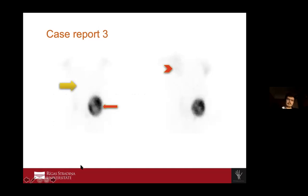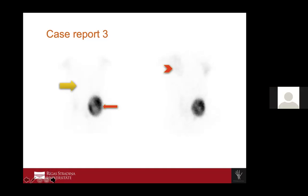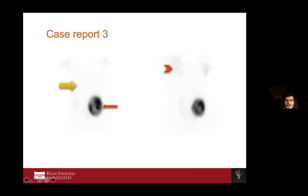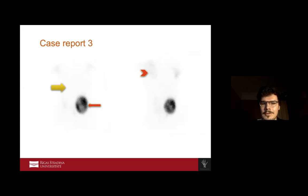Case 3: This is in the neck region — scintigraphy of the thyroid gland using technetium-99m, which is quite common. We see a hot spot, meaning it shows functional activity, as opposed to a cold spot which would be a mass without functional activity. This is an adenoma in the thyroid gland, and we see that the rest of the glandular tissue is very faint and shows no activity.